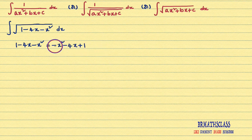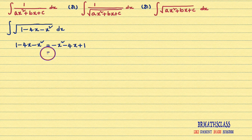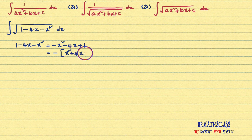After considering the expression ax² + bx + c, you check whether the x² coefficient is 1 or not. If it is not 1, we make it 1 by taking that number common. In this problem, the x² coefficient is minus 1. So we take minus common. If you take minus common, this will become plus x² — because we are taking minus common and this plus will become minus. Now you can check that the x² coefficient is 1.